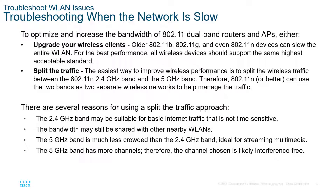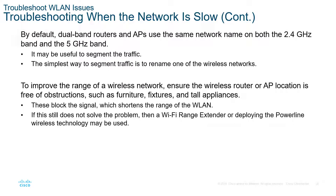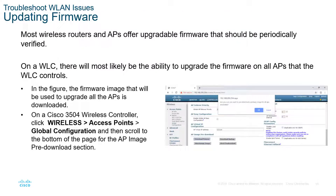To optimize and increase bandwidth for slower speeds, consider looking at dual-band routers. Maybe upgrade wireless clients from the lower B/G standards to N or AC — anything around 802.11n or better is appropriate. Using slower devices will make the wireless even slower. Also consider a split traffic approach — have both 2.4 GHz and 5 GHz separated so that streaming connects to one and regular data browsing connects to the other. By default, dual-band routers and APs use the same network name for both, but you might segment the traffic and separate the names. Also make sure the hardware is up to date by updating the firmware.